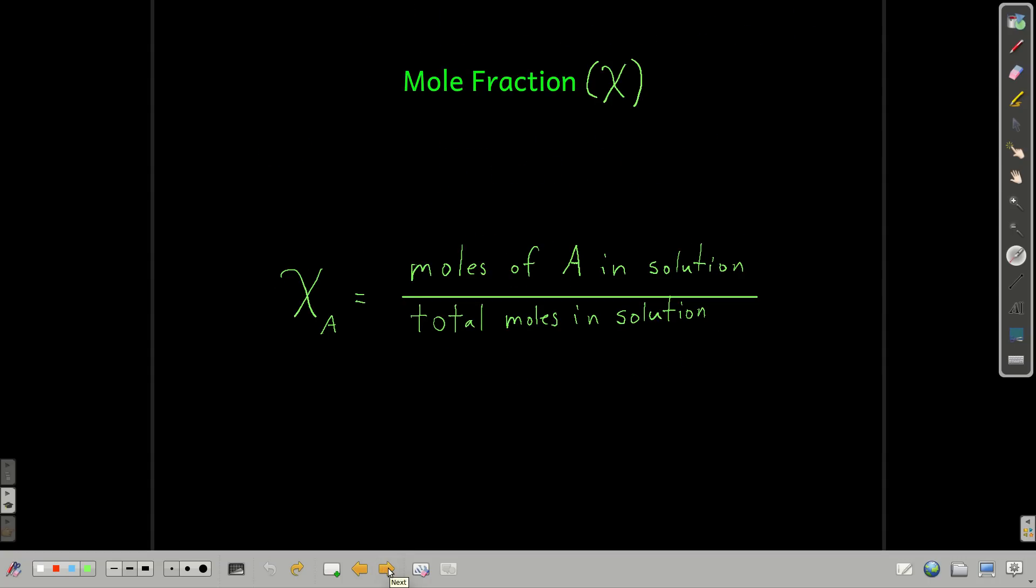Next, mole fraction. You may have not seen this before, but we're using it in the first lab that we do this semester. So the definition. We have a solution, and let's say the solute, there's just one solute. It could be more than that. But the A is the solute. And the mole fraction of A in that solution. This is supposed to be a Greek letter chi. Chi sub A, the mole fraction of A. It's defined as being the moles of A in the solution divided by the total moles in the solution. So remember, the solution contains the solute plus the solvent. So we have to add them together on the bottom.